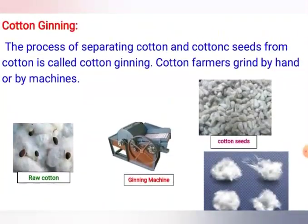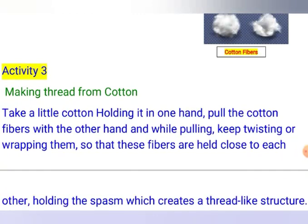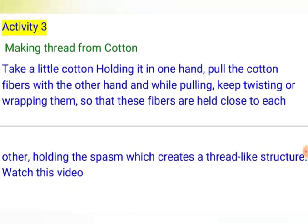Here is a third activity: how to make thread from cotton. Take a little cotton and hold it in one hand. Pull the cotton fibers with the other hand, and while pulling, keep twisting and wrapping them so that the fibers are held close to each other, creating a thread-like structure.